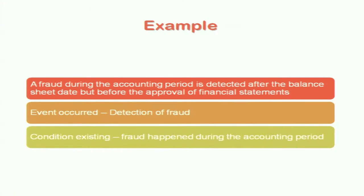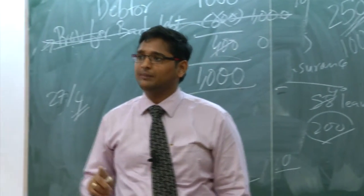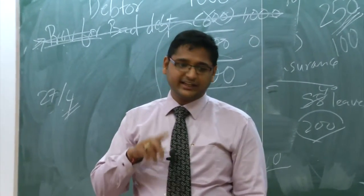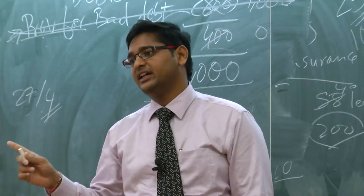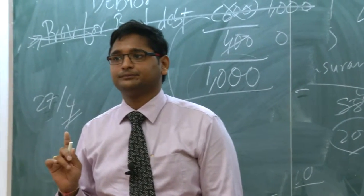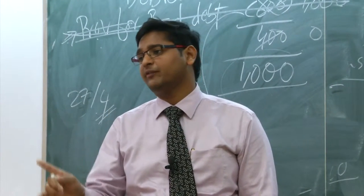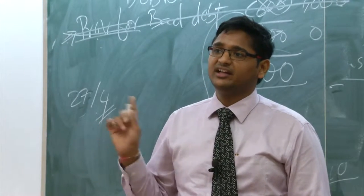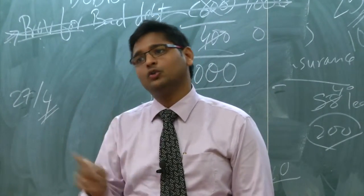Another example: a fraud during the accounting period - fraud happened between April and March - but I detected it after 31st March, say on 27th April. Was there a condition existing as on the balance sheet date? Yes - the fraud happened before 31st March. The event is detection of fraud; the event occurred after the balance sheet date, but the condition of fraud existed before. Hence I have to go back and adjust my accounts for the fraud. If the fraud occurred on 1st April and detection was 27th April, there is no condition existing as on balance sheet date, so I will not adjust.